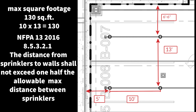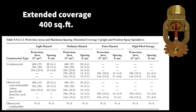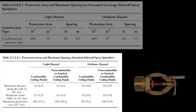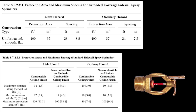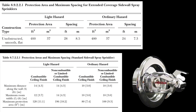So depending on the direction of the spacing, in the distance going 10 feet we can't be any more than five feet off the wall, and in the distance going 13 feet we can't be any more than six foot six off the wall. Other tables include the extended coverage upright pendant, the standard spray sidewall, and the extended coverage sidewall.